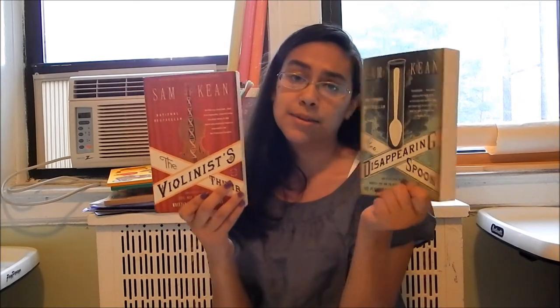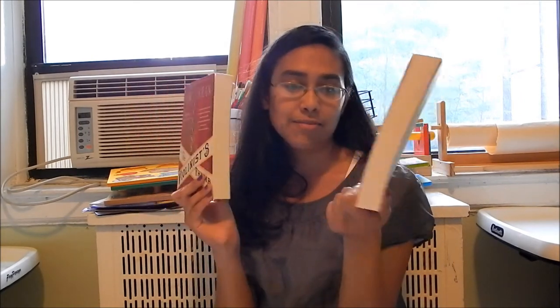The next two books that I got are by the same author, and I wanted to read them for a while. Every time that I was going to buy it, I wound up buying something else. After I saw The Violinist Thumb in the bookstore, it stuck in my mind, so I bought The Disappearing Spoon and The Violinist Thumb. This one's about DNA, and this one's about The Periodic Table. So, I am really excited.